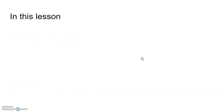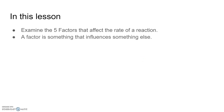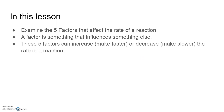In this lesson, we're going to examine the five factors that affect the rate of a reaction. A factor is something that influences something else. These five factors can increase — make faster — or decrease — make slower — the rate of a reaction.